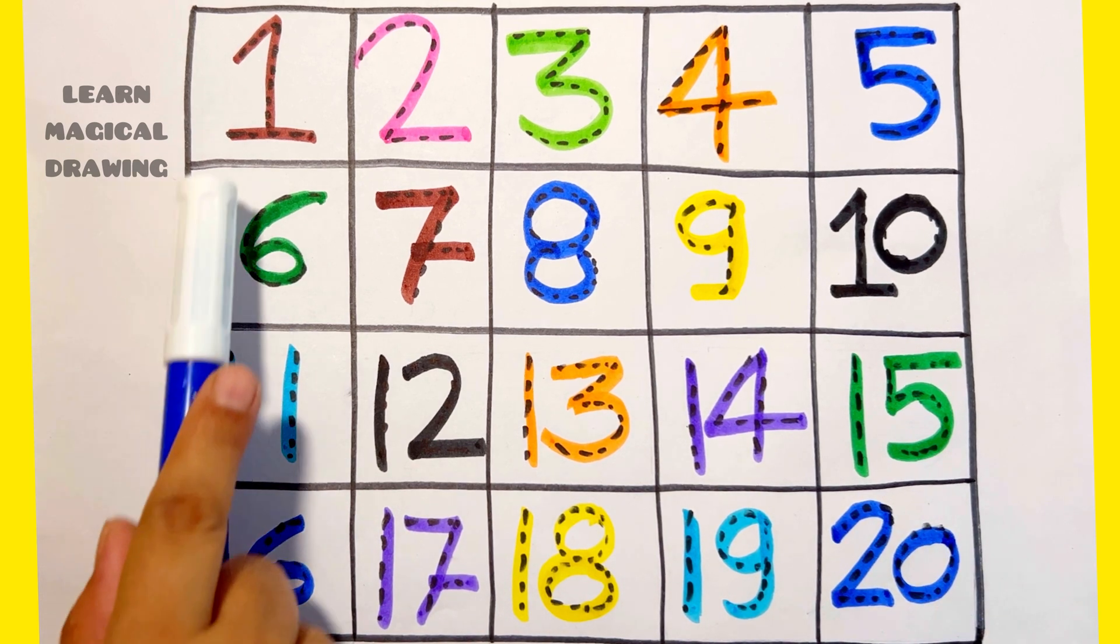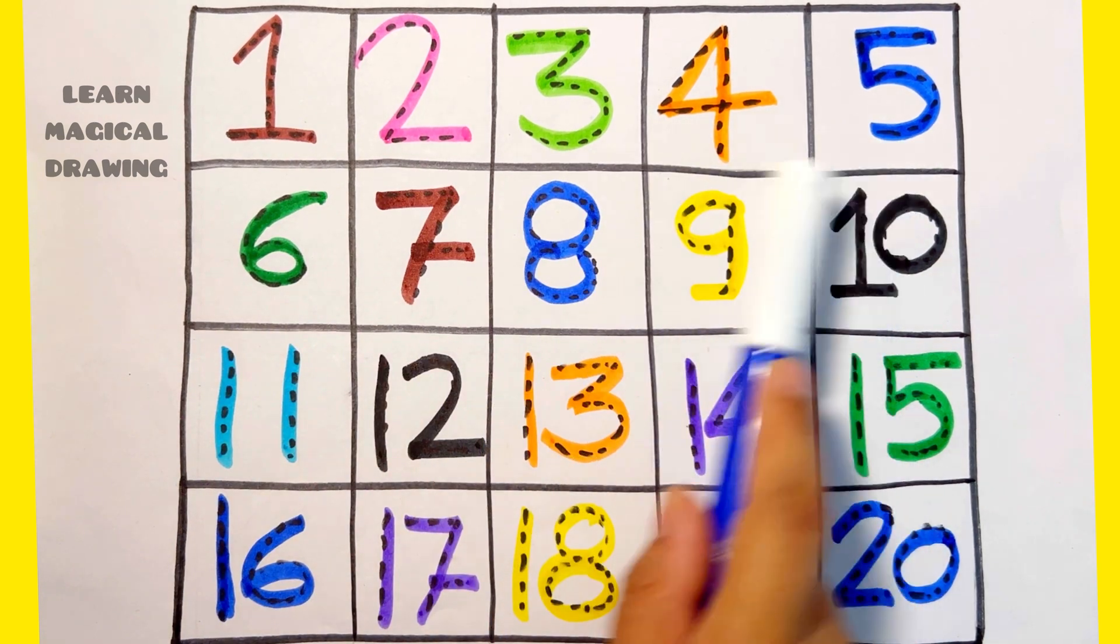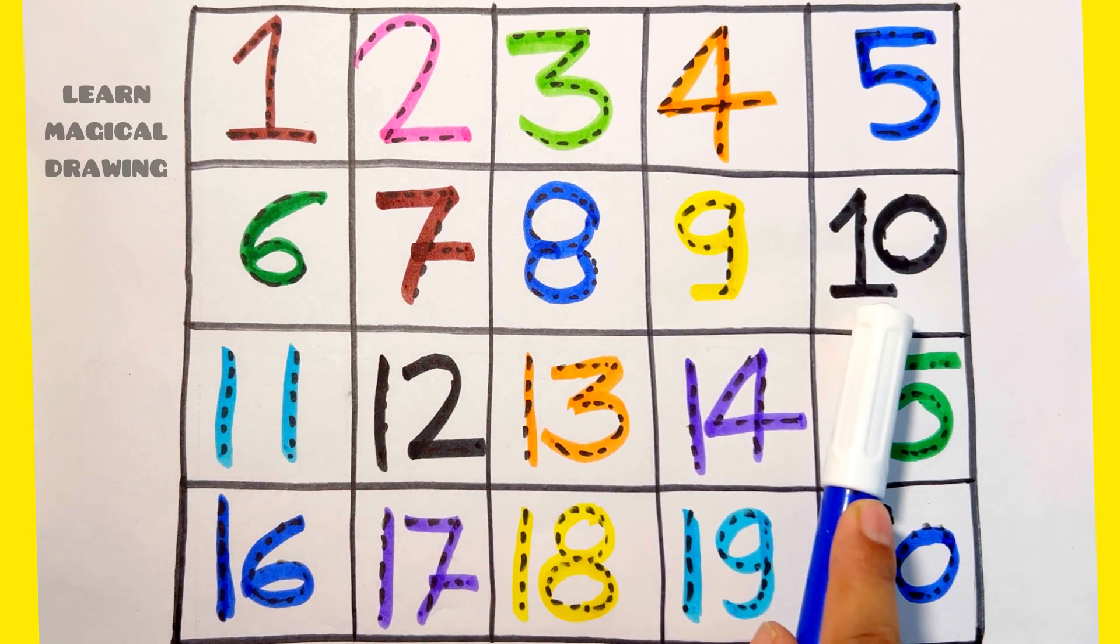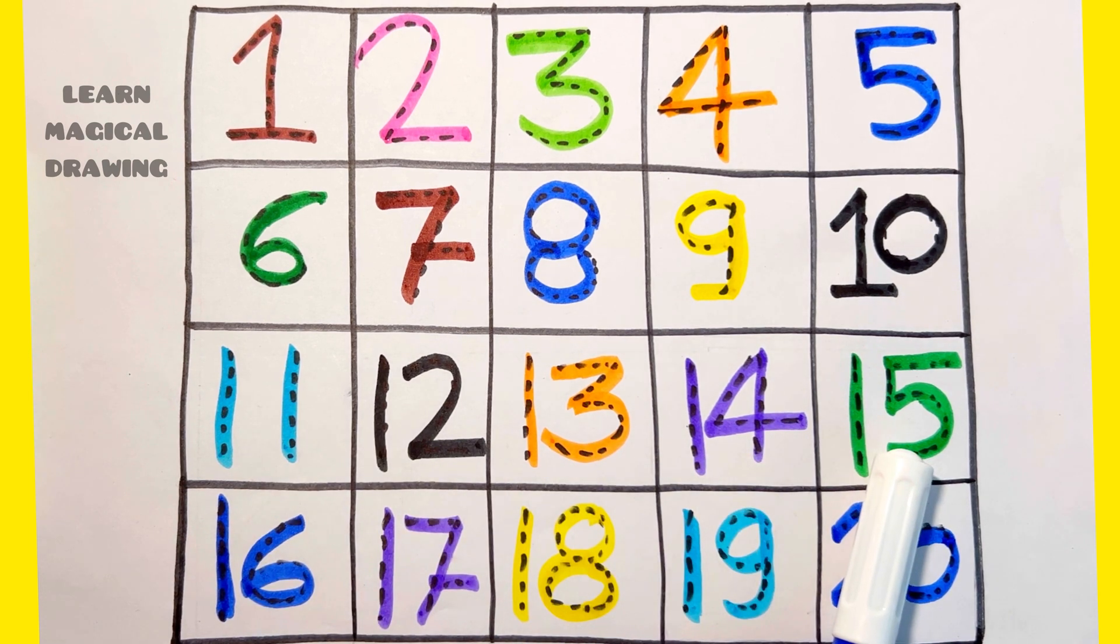Read again. 1, 2, 3, 4, 5, 6, 7, 8, 9, 10, 11, 12, 13, 14, 15, 16, 17, 18, 19, 20.